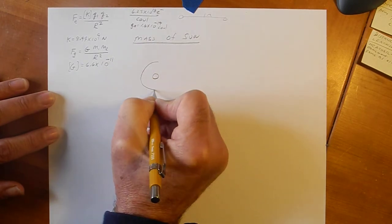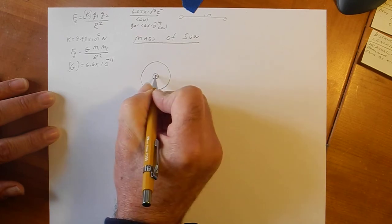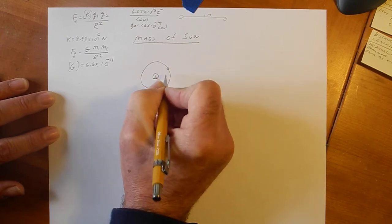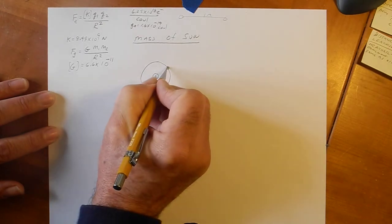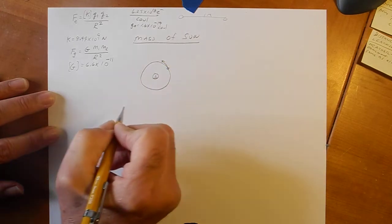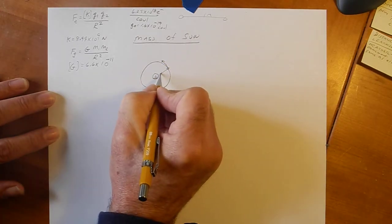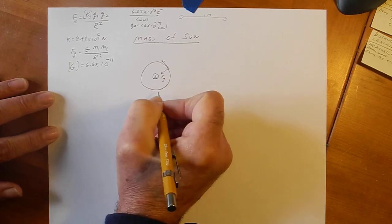So, here's the sun, and this is the Earth orbiting the sun with some velocity this-a-way. Okay. The force of gravity is pulling it in. Okay.